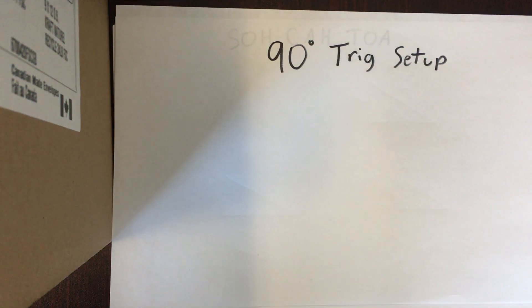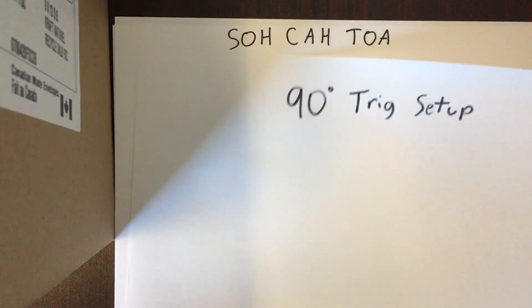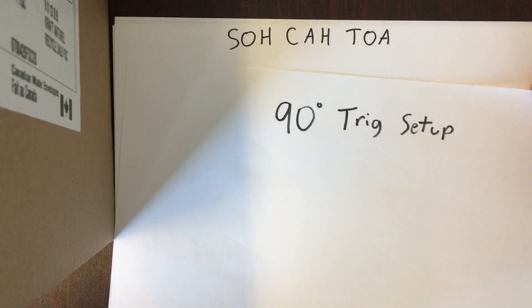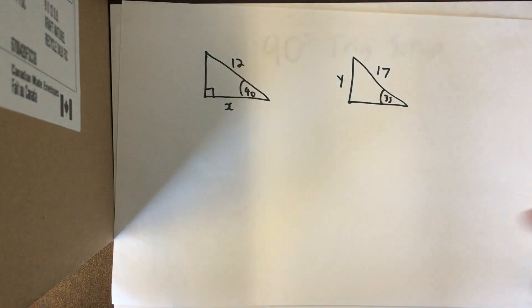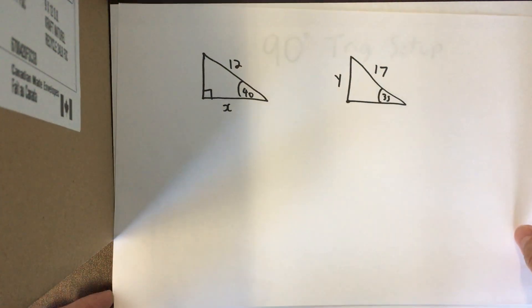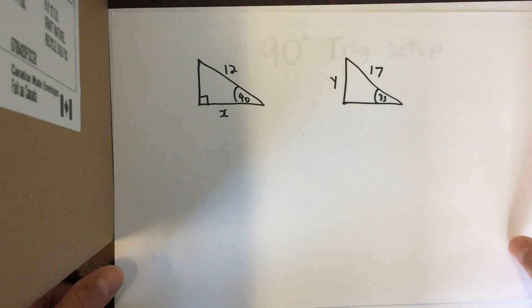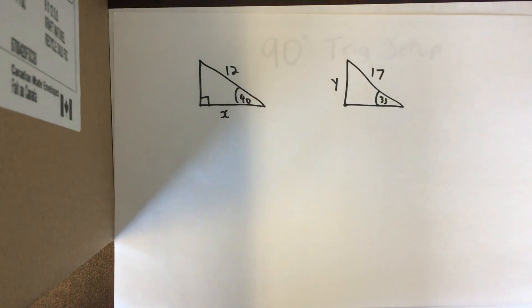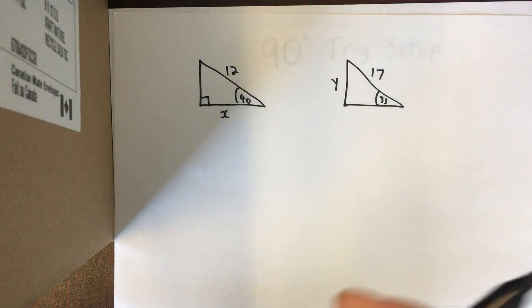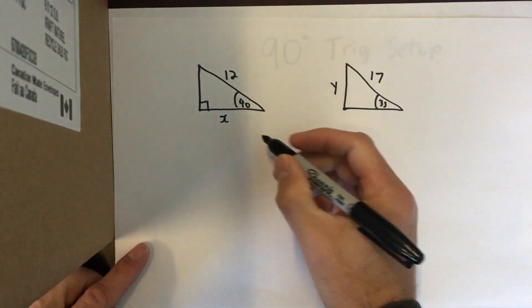I'm calling this video 'Trig Setup.' You want to watch this video if you already went through SOH-CAH-TOA and you're still having a little bit of trouble setting up your triangles. I'm going to go through every possible example for setting up a 90-degree triangle — without actually solving it. We're just practicing the setup.